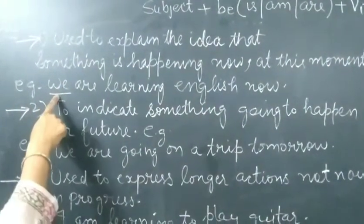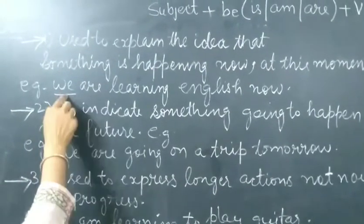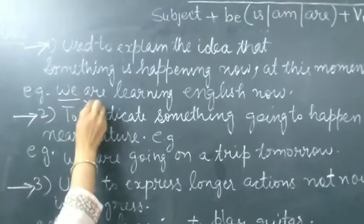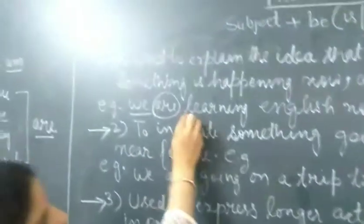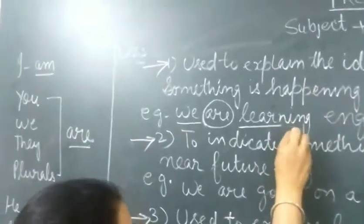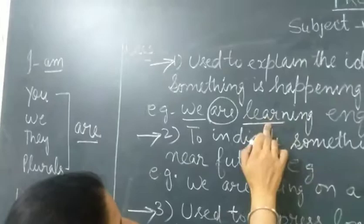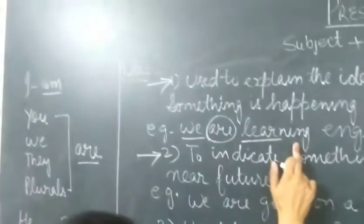Abhi hum kya kar rahe hai? Hum English seekh rahe hai. We are learning English now. So, here, we is the plural of first person. Zyada hai, uske saath hum kya use karenge, are, learn plus ing. This is the present participle form, first form of verb plus ing. English now.